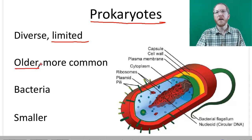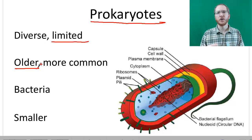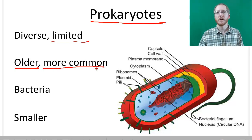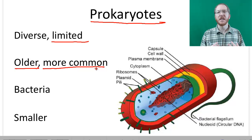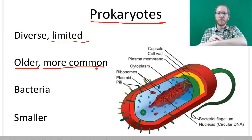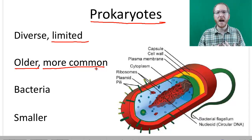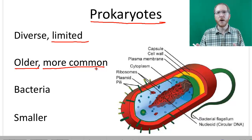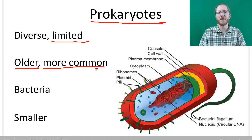Prokaryotes are the oldest cells we have — we have fossils going back about 3.5 billion years. And because they're so small, they're still more numerous and more common than eukaryotic cells. Even on your own body, you're outnumbered about 10 to 1 by prokaryotic cells because they coat your skin and are all through your digestive tract. So even on our own bodies, eukaryotic cells are the minority.